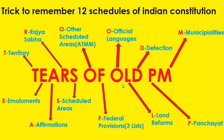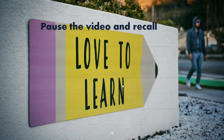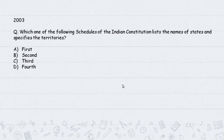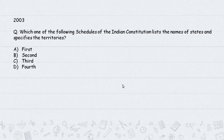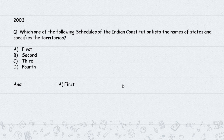Now let's practice questions. Question: Which of the following schedules of the Indian Constitution lists the names of states and specifies their territories? Using our TEARS mnemonic - T stands for Territory, so obviously the answer is the First Schedule. This question is straightforward for MPSC but may come indirectly in UPSC prelims.